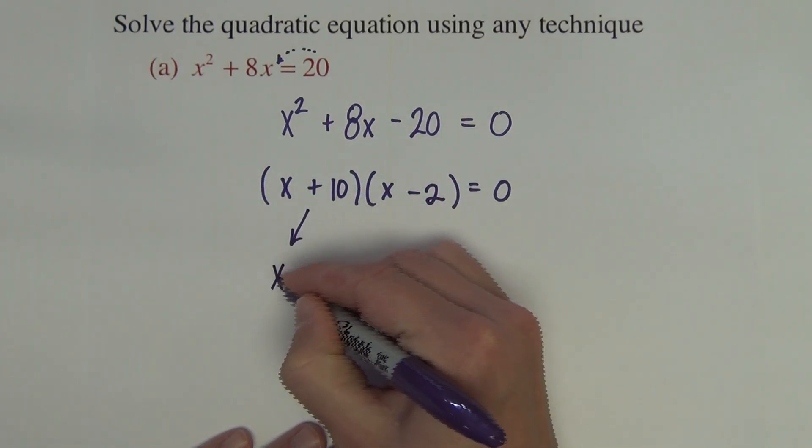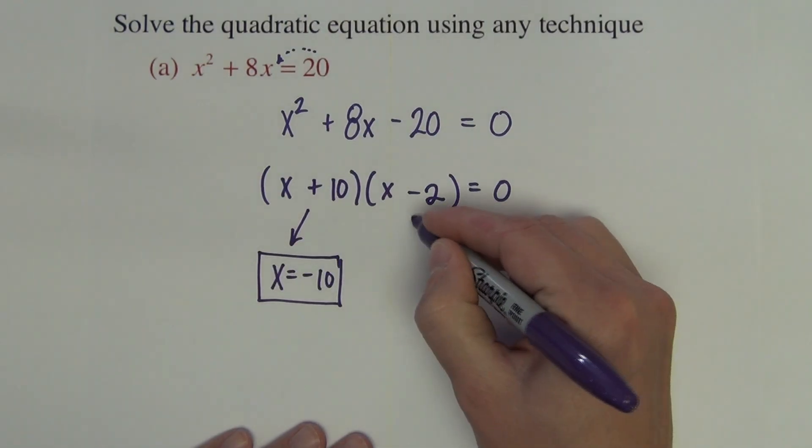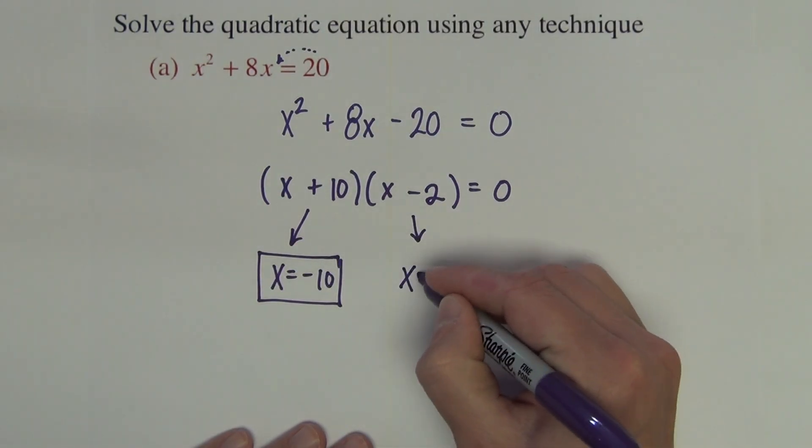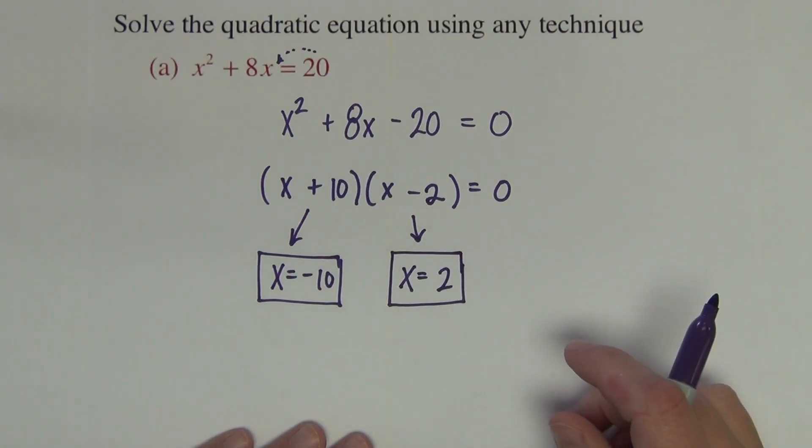So take this factor, set equal to zero, the solution is negative 10. We set this one, set equal to zero, the solution is positive 2. And that's finished.